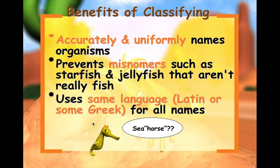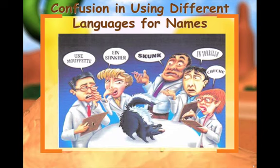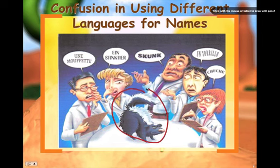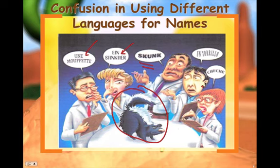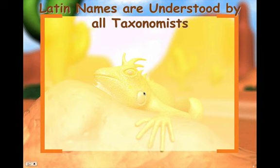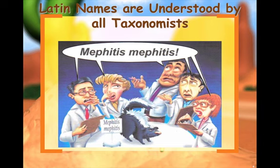For example, we call this a seahorse, but it's not really a horse. One reason we use Latin is because it provides a common language among all scientists regardless of what language they speak. So a skunk might be called different things in French, German, Spanish, or English, but scientists would all call it Mephitis mephitis.